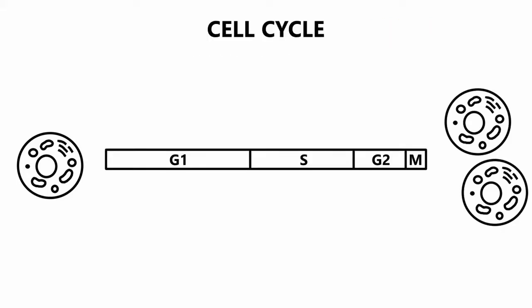This cycle of duplication and division is the essential mechanism by which all living things reproduce, and thus controlled by numerous regulatory mechanisms to ensure its correct execution.